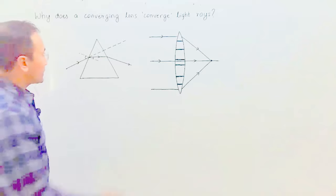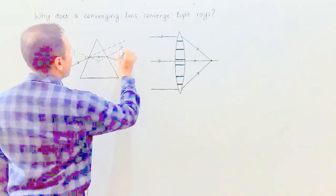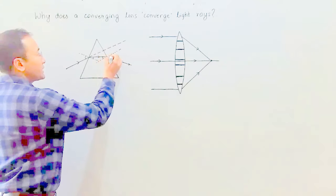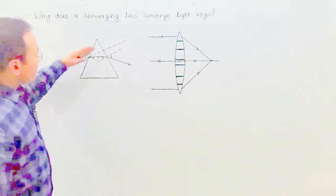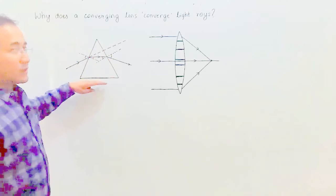When it strikes the second face, again it has to deviate, but this time the deviation is away from the normal. We can know this from this angle: this angle is less and this angle is more. That means the light ray will be going towards the wider end. This is the tapered end, this is the wider end.